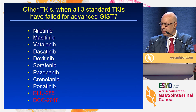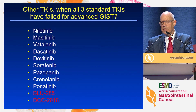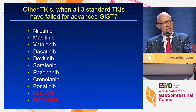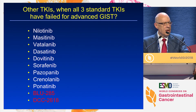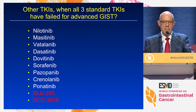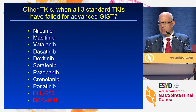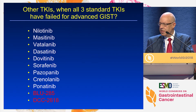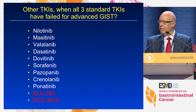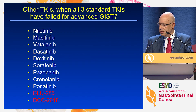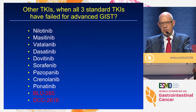What about other TKIs when patients fail those three drugs? Here's the list of drugs that have been tried over a number of years. All of them in white have some activity from time to time, but it's very hard to predict when, and none of them are marketed for the treatment of GIST because there are no phase three studies that have warranted taking them forward.